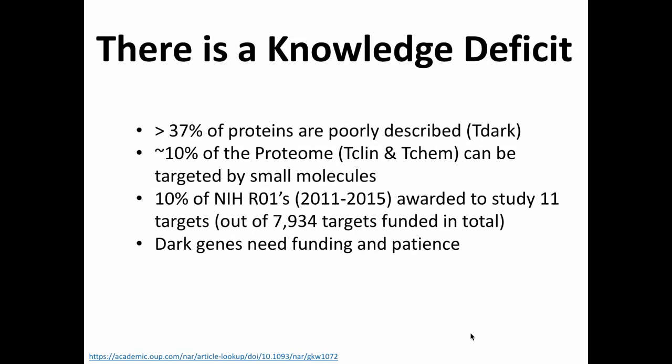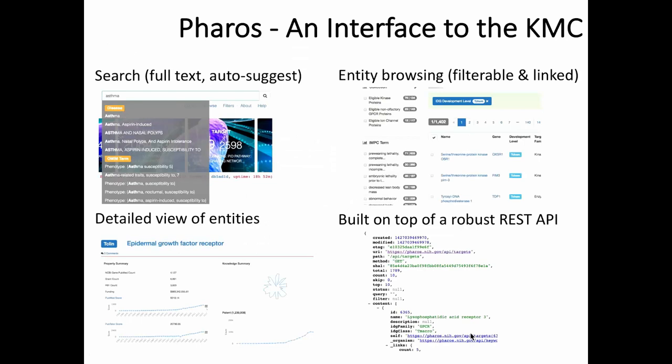The conclusion is that there is a knowledge deficit: a large fraction of proteins are poorly described as TDar, and only 10% of the proteome can actually be targeted by small molecules. By looking at grant funding, 10% of NIH R01s between 2011 and 2015 were awarded to study just 11 targets out of nearly 8,000 funded across all R01s. Dark genes need funding and patience, and hopefully the KMC along with Pharos will be able to speed things up.